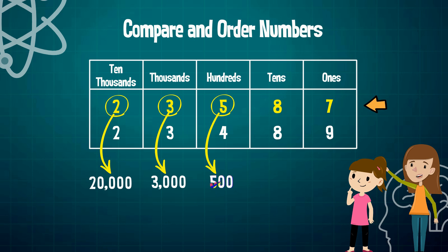The number 5 has a value of 500 because it is in the hundredth place. 8 has a value of 80 because it is in the tens place. And 7 has a value of 7 because it is in the ones place.